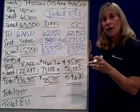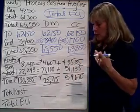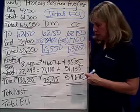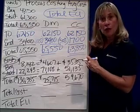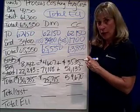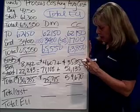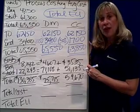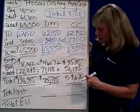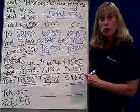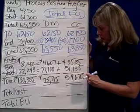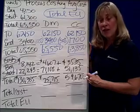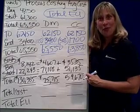Likewise, under average costing, I'm going to find the total cost of conversion. So the beginning conversion cost of $3,535 for labor and overhead, plus the current labor and overhead costs of $51,135, gives me the total cost for conversion of $54,670. That's step three.